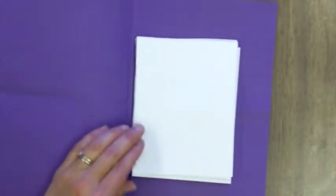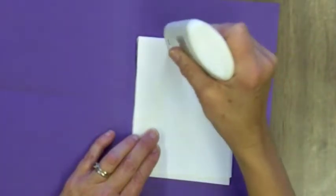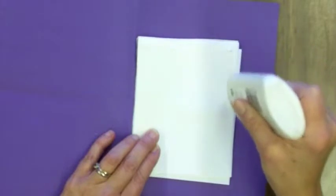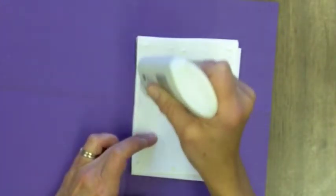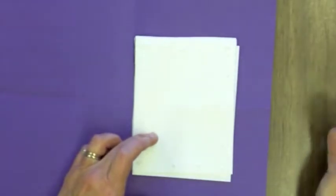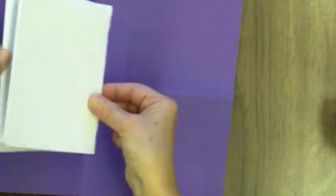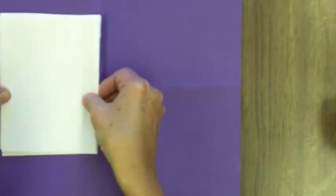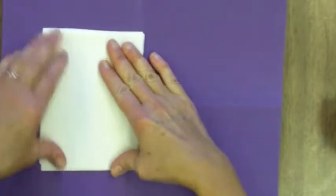And then take your glue and on the front page you're going to put glue dots around the edge. All the way around the edge because this is what's going to attach the book to the cover.